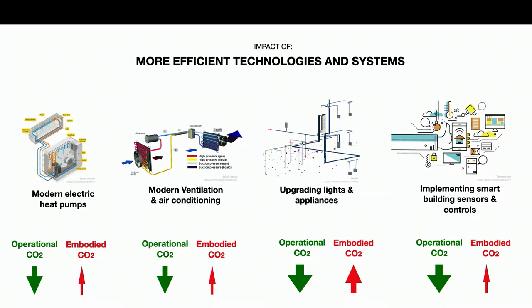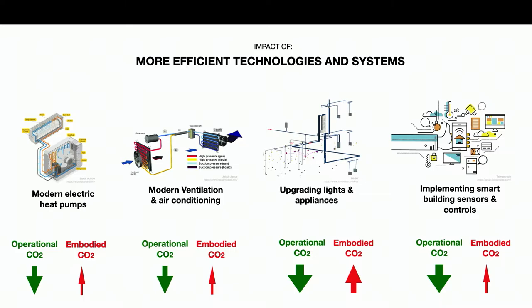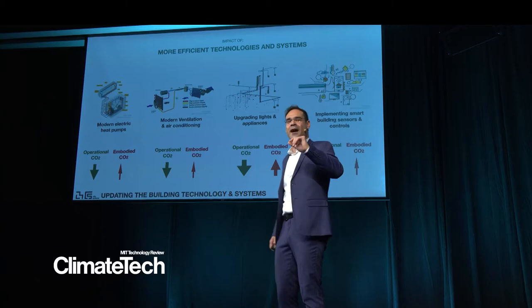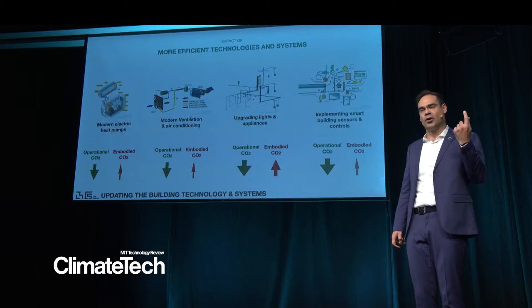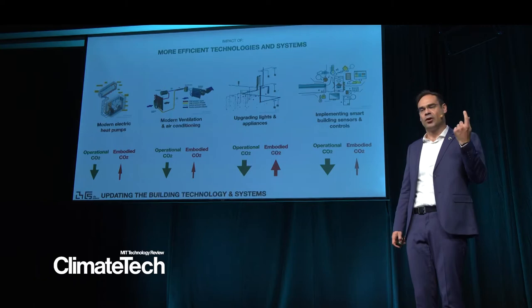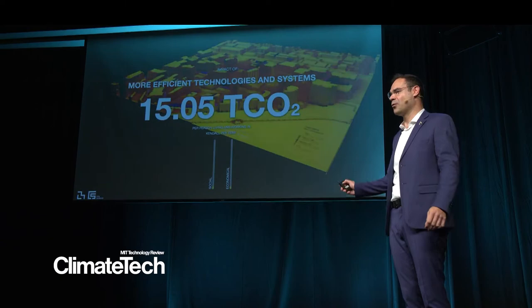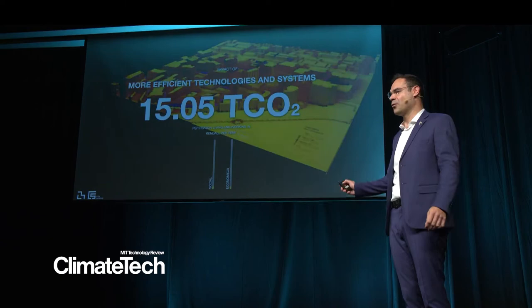What about building retrofitting? If we make more efficient electric pumps, more efficient ventilation and air conditioning, more efficient lighting, and implement a smart building system to navigate all this technology — the operational CO2 is going to decrease because we become more efficient. However, we are bringing more materials to the building, so embodied CO2 increases. Overall, we can reduce 0.40 tons of CO2 per person living and working in Kendall Square, with slightly positive social and economic impacts by bringing some jobs to the community.